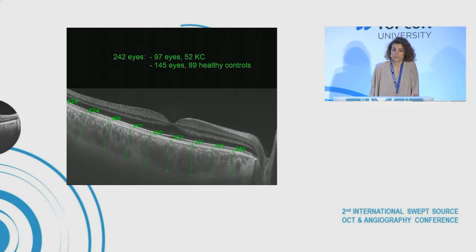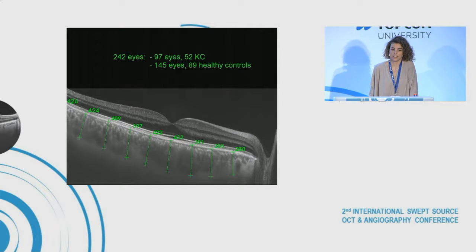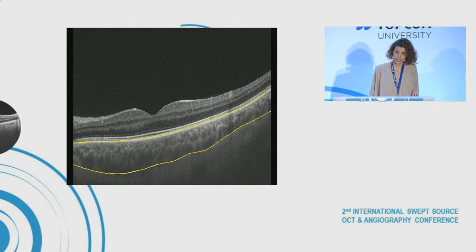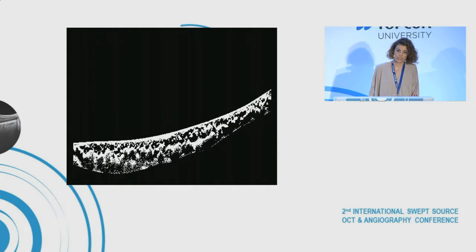At the beginning, we performed a B-scan — a horizontal B-scan of the choroid and retina — and analyzed the choroidal thickness profiles in nine different locations. We then binarized the choroid. The software automatically detects the inner and outer boundaries of the choroid, and shows the stromal region in white and the vessels in black.